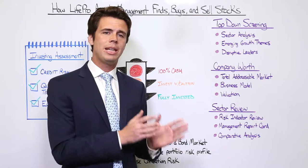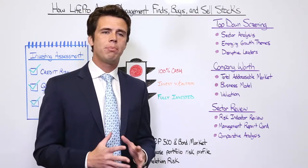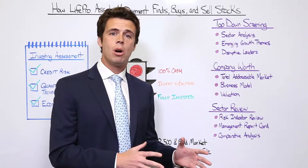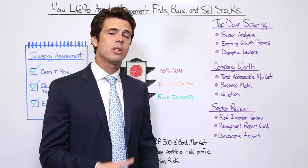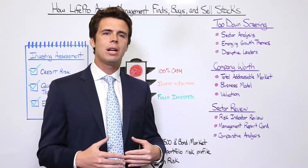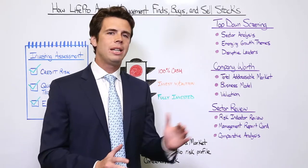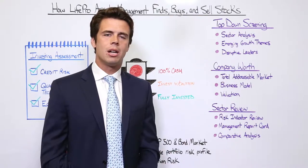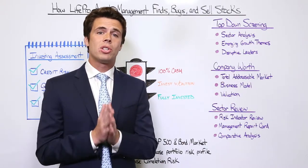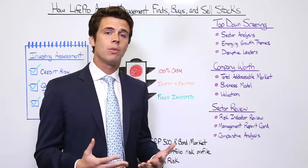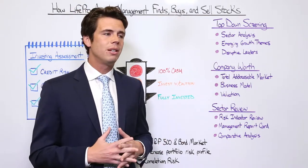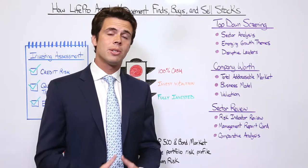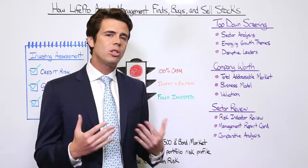Once we've made that sector determination, we ask: what are the secular growth themes within each of those sectors? These are growth patterns taking place regardless of what the economy is doing. A great example is the movement of retail spending from brick-and-mortar malls to online. When we look at technology and consumer stocks, we identify companies that have a long-term tailwind — companies that will grow regardless of how the economy ebbs and flows. In this case, Amazon is a great example of a company we've been invested in for years that has really delivered a lot of value to our clients.